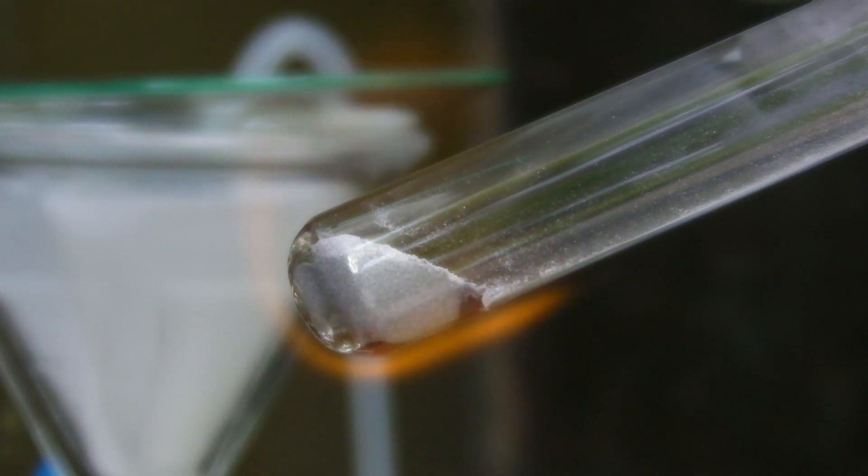After a short while the test tube turns black, because the glass is reduced to silicon by the magnesium.